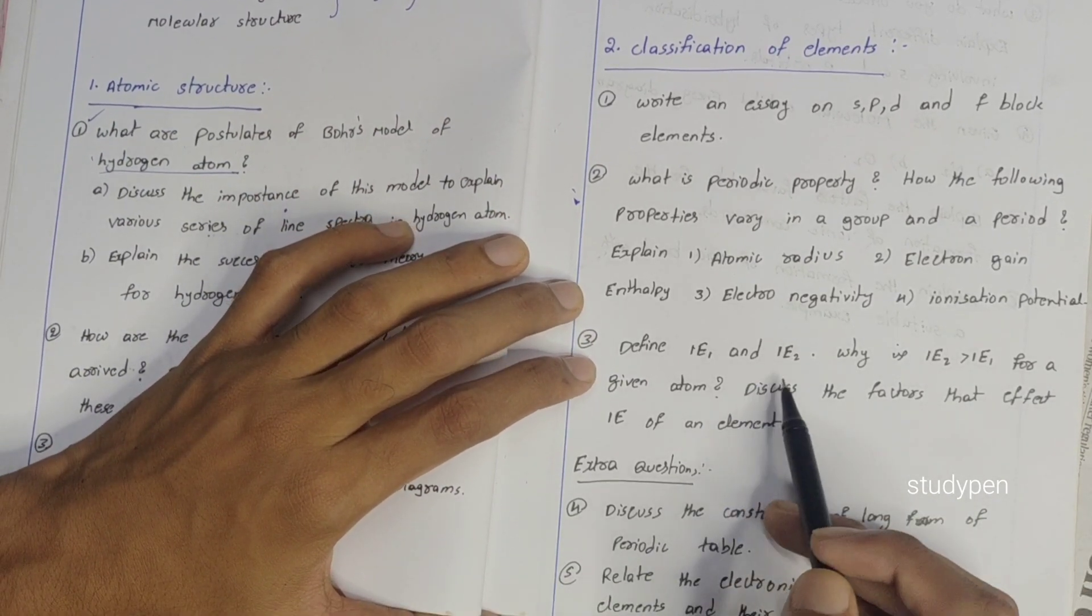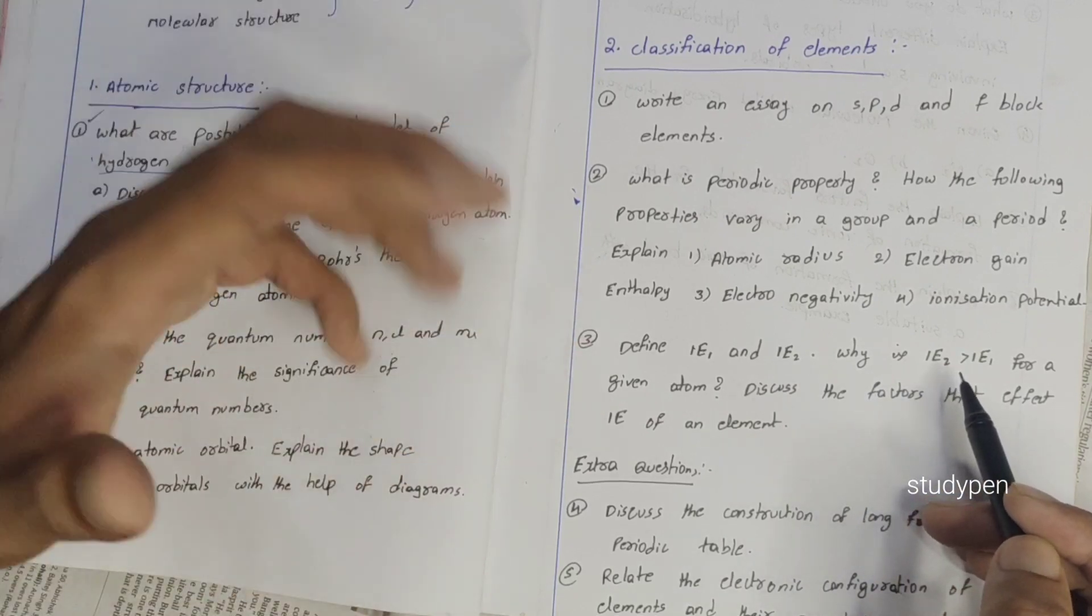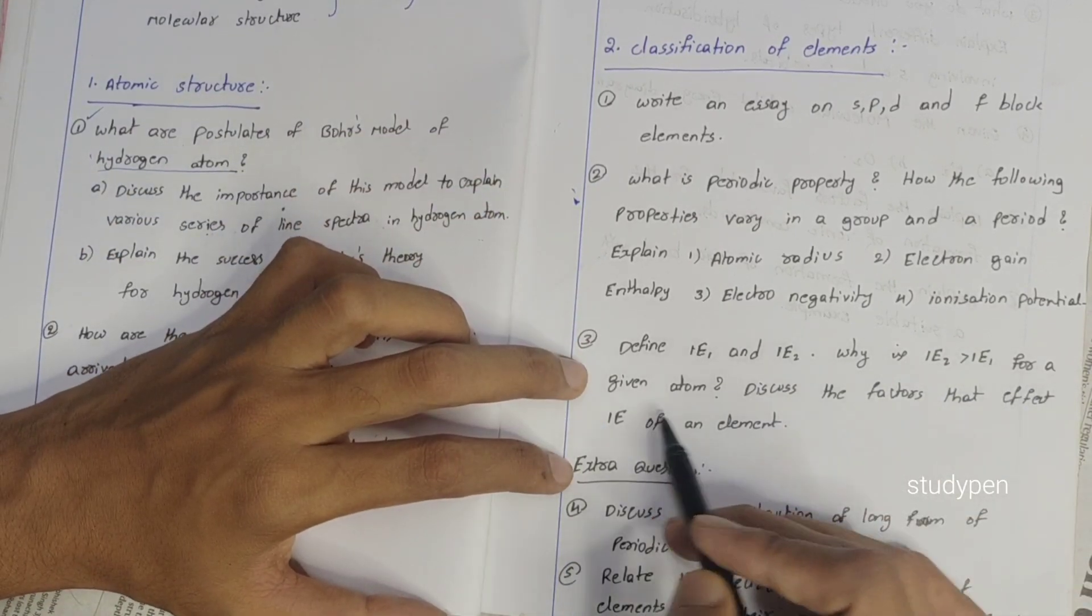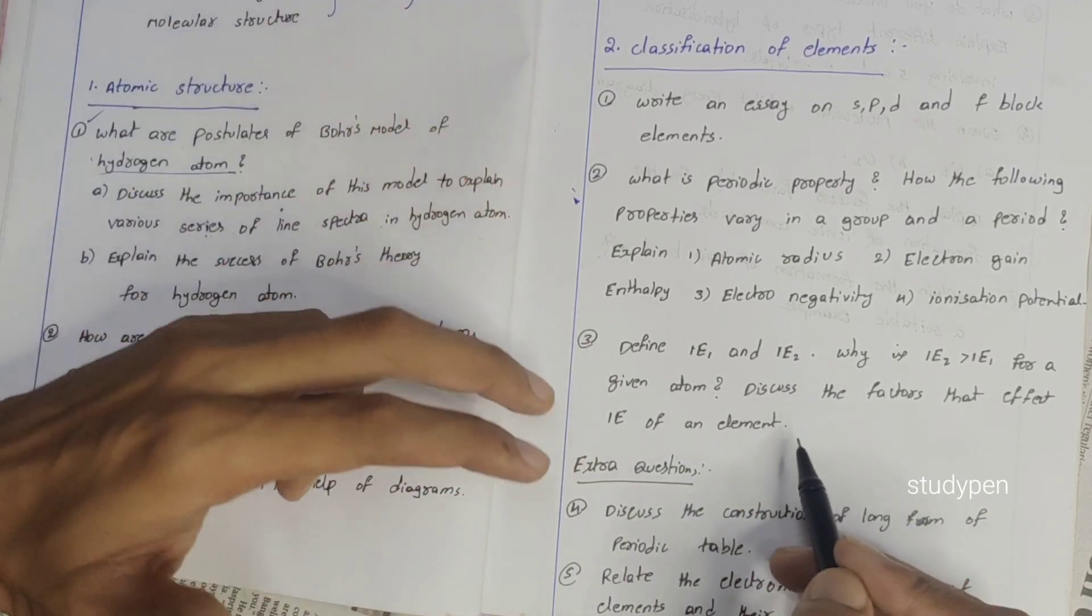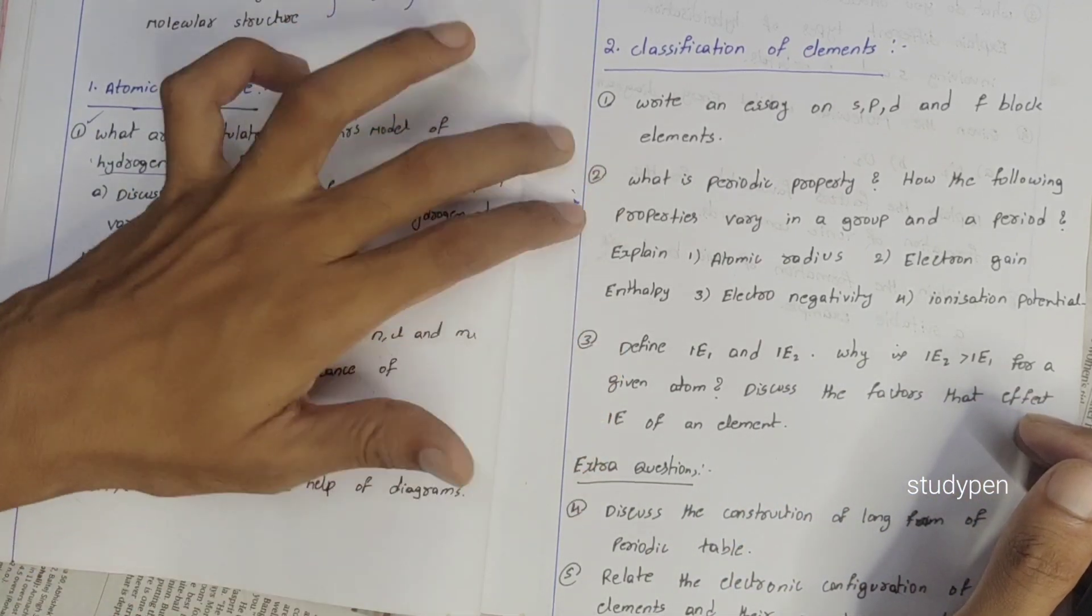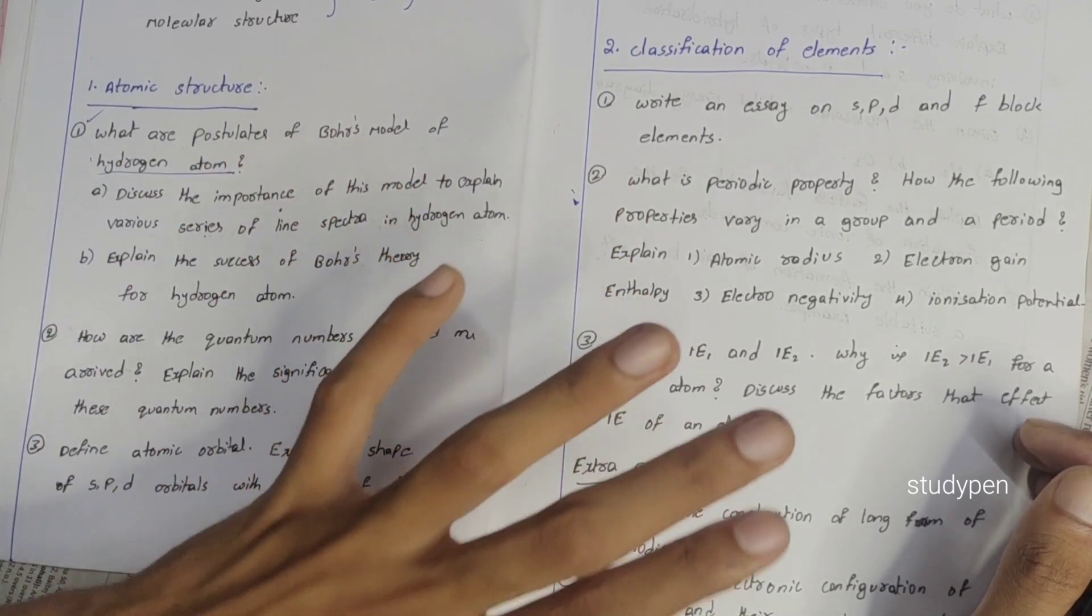Next, define IE1 and IE2, ionization energy 1 and ionization energy 2. Why is IE2 greater than IE1 for a given atom? Discuss the factors that affect IE of an element. This is a very easy question. These three questions complete.